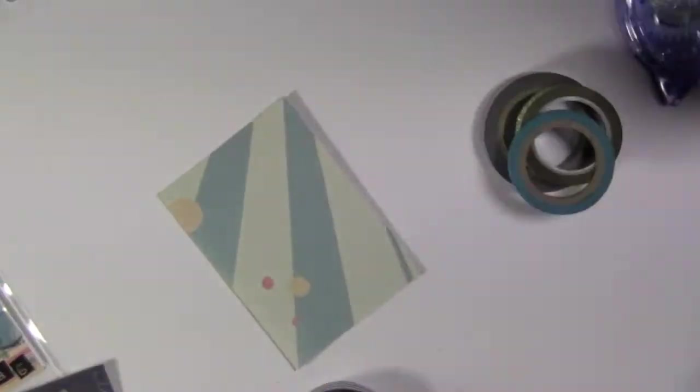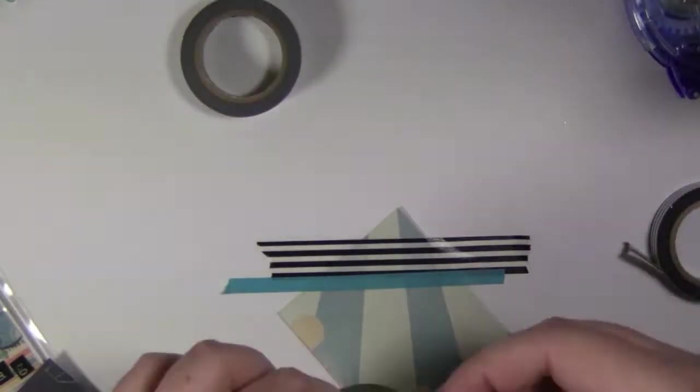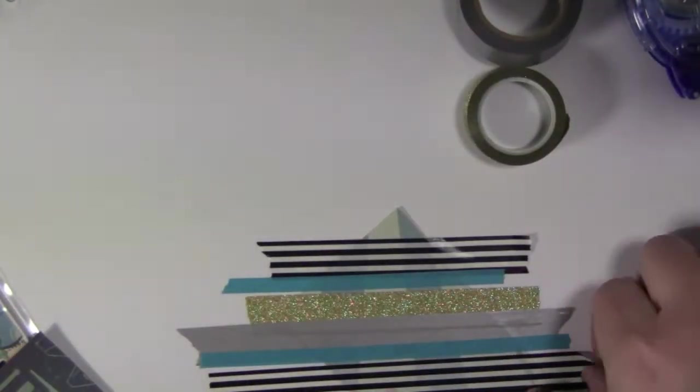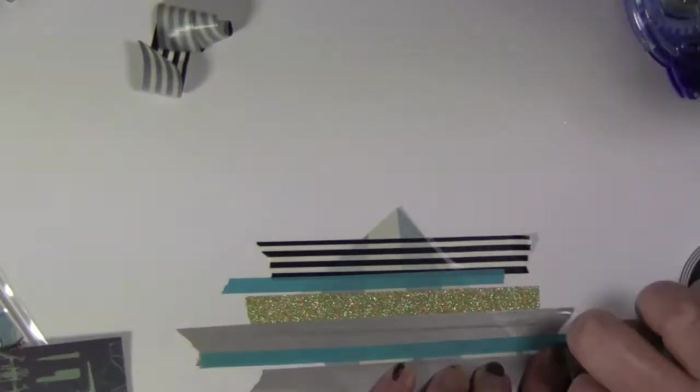The next card I created my own pattern with some washi. The striped washi is from Target. The blue washi is from Michaels. The gold washi is from I don't remember where. And the silver washi is from Target. The ones from Target are Scotch brand.